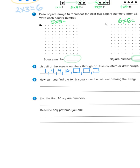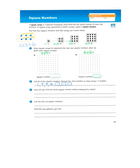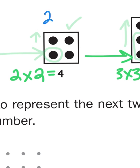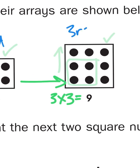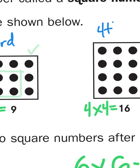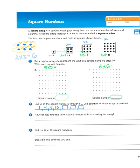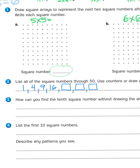Now it says: how can you find the 10th square number without drawing an array? Well, if you follow the formula — the first square number is 1 times 1, the second is 2 times 2, the third is 3 times 3, the fourth is 4 times 4 — I bet you are seeing a pattern develop. So how would I find the 10th square number without drawing it? Then I ask you to list the first 10 square numbers. We have the first 4 illustrated on the top; you'll come up with the next 3 to solve this problem. Number 2, finding square numbers through 50 — just repeat that process.